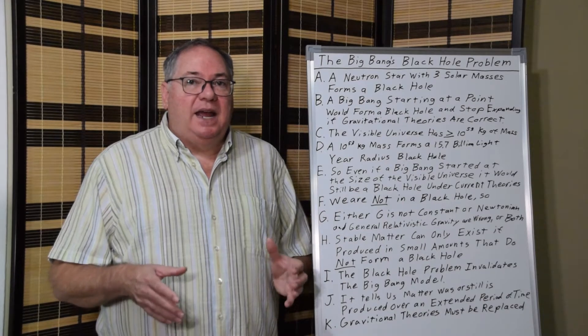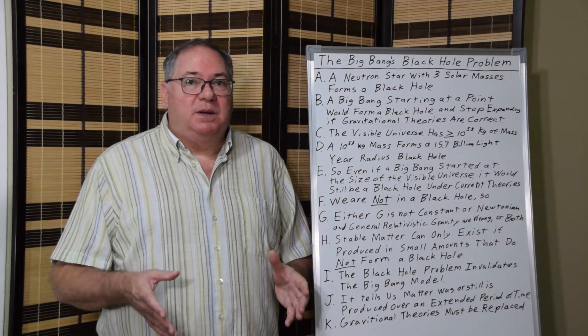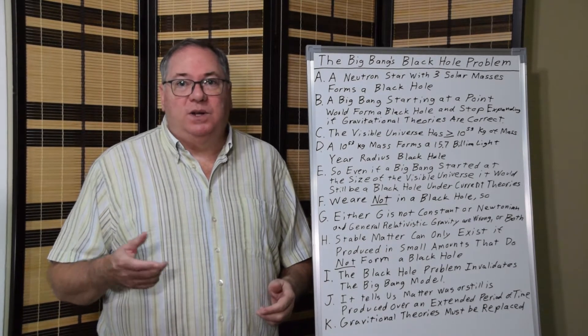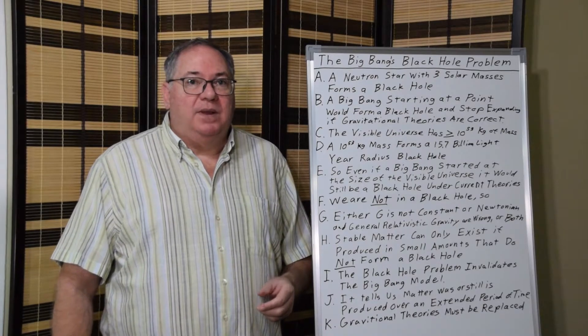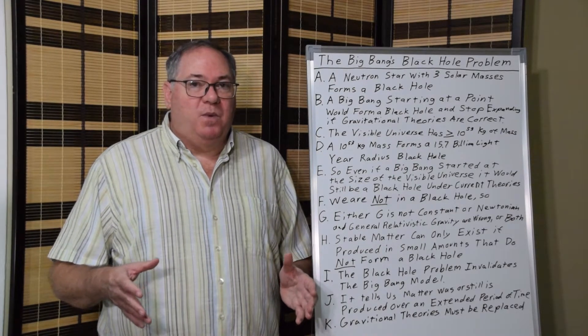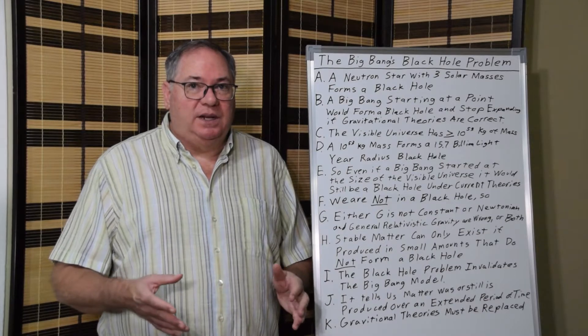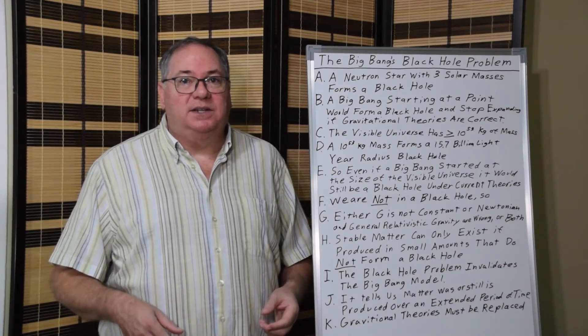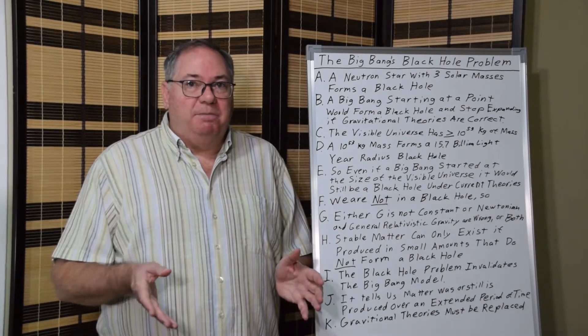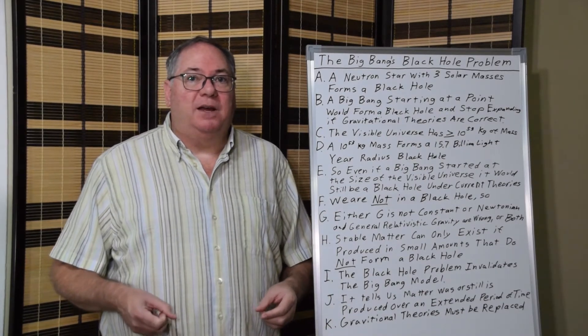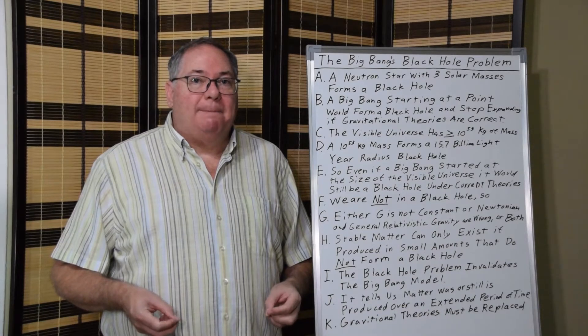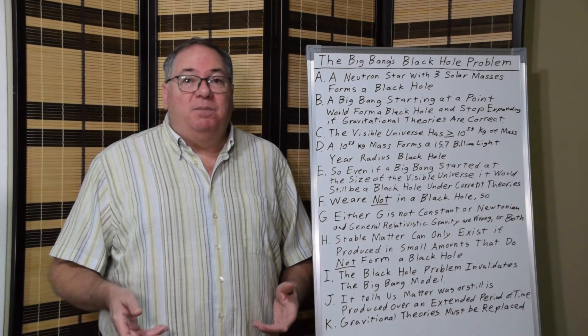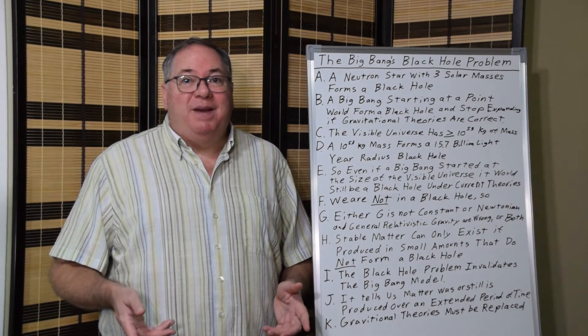So we need to have a much smaller scale matter production that avoids black hole production. Now, there may be when a galaxy is being produced that black holes are produced in the center, because we know that they exist. So there may be some matter production that becomes black holes fairly quickly. But we don't know because no one's studying matter production.